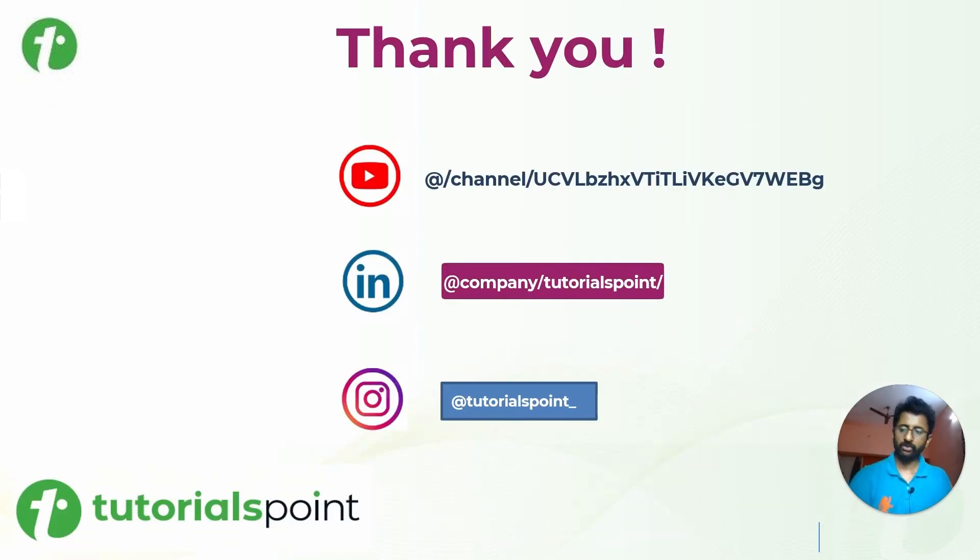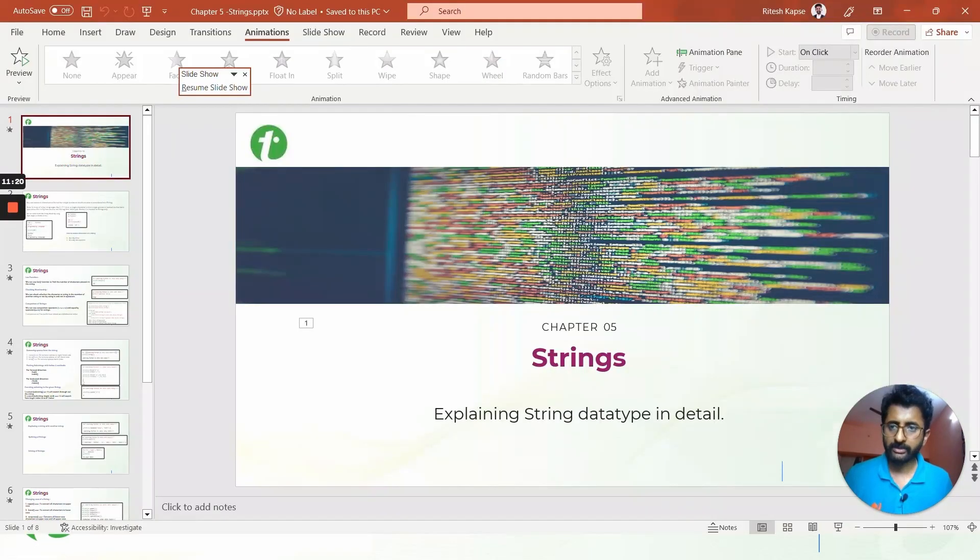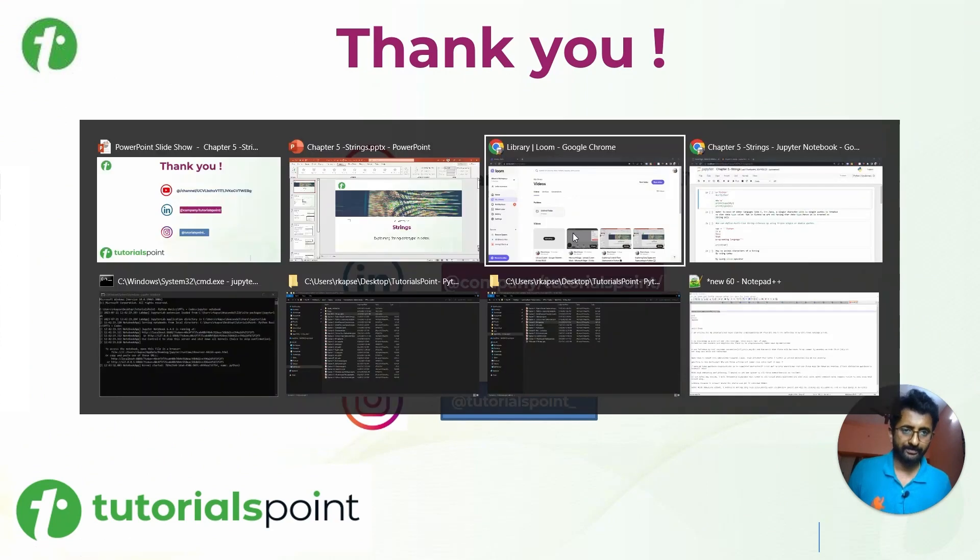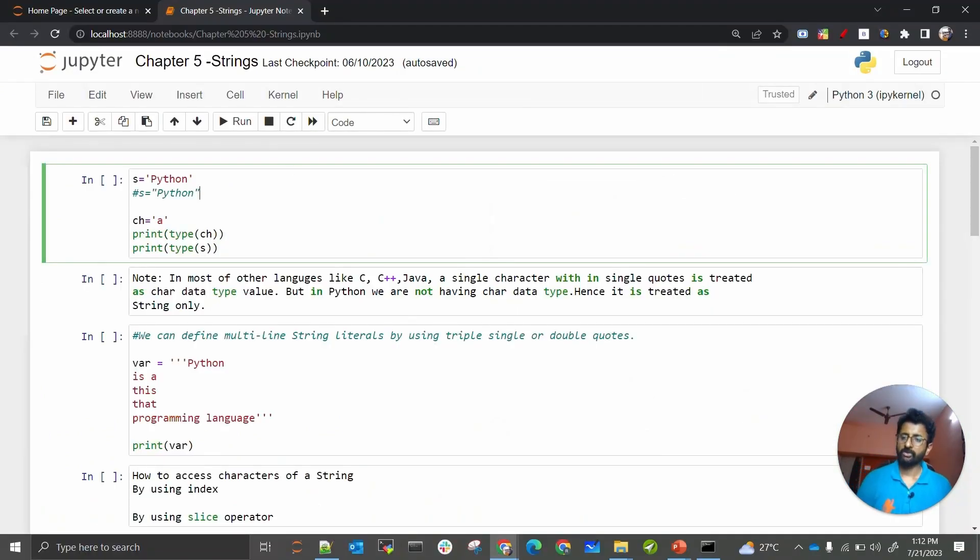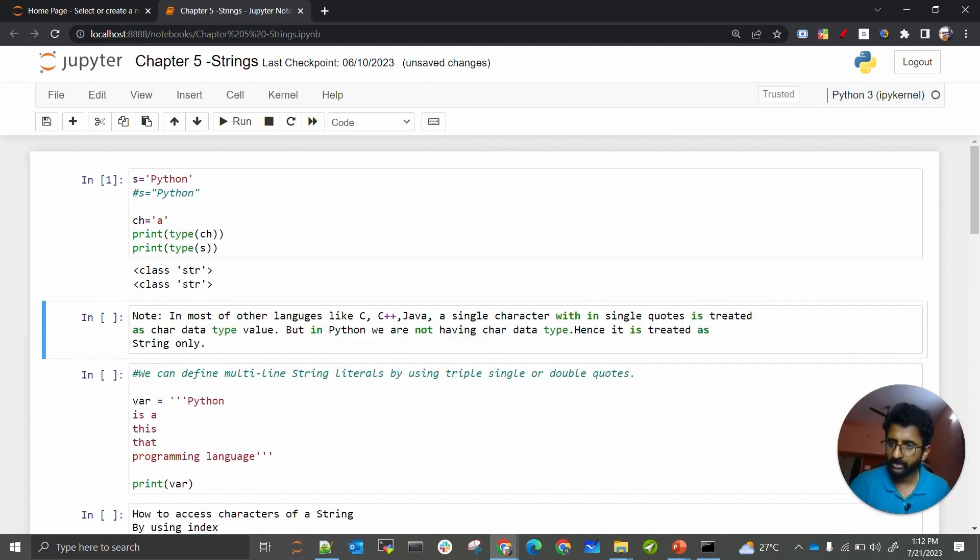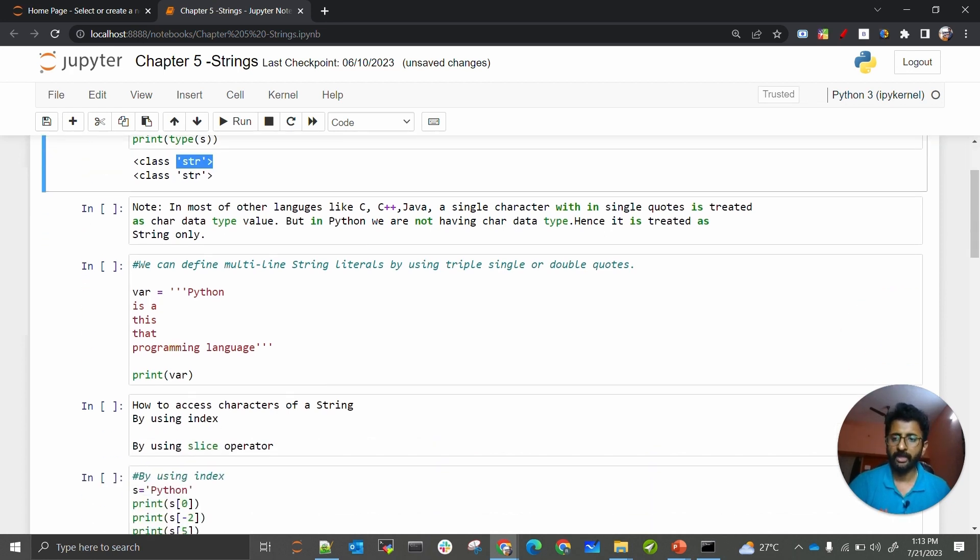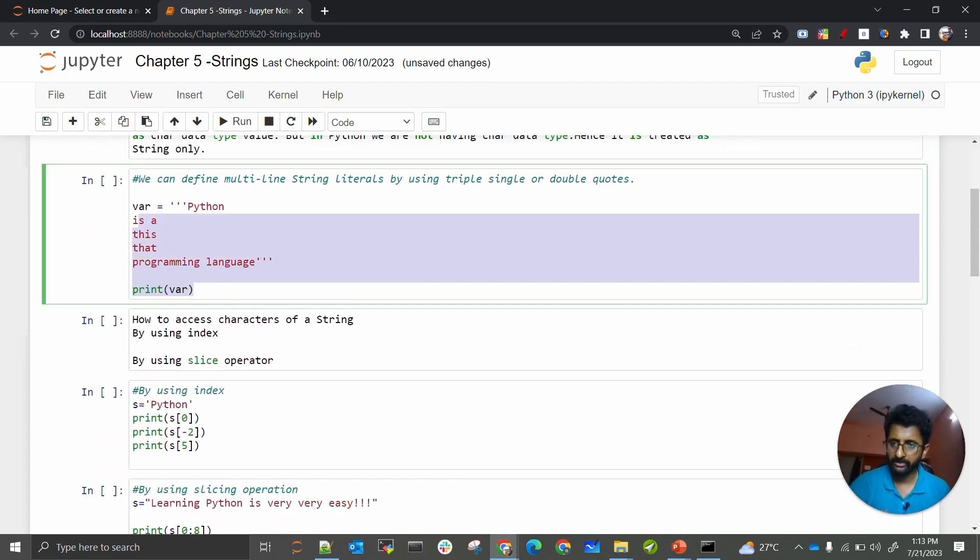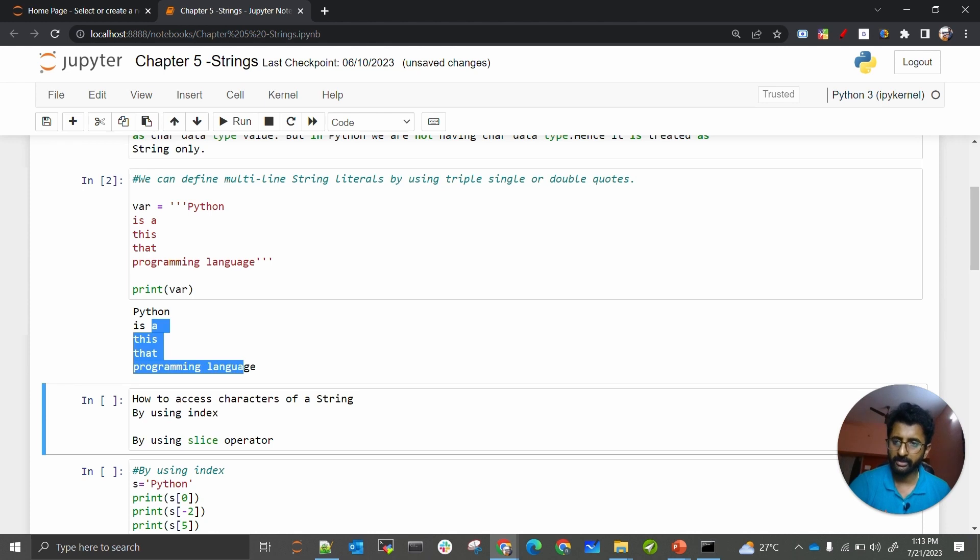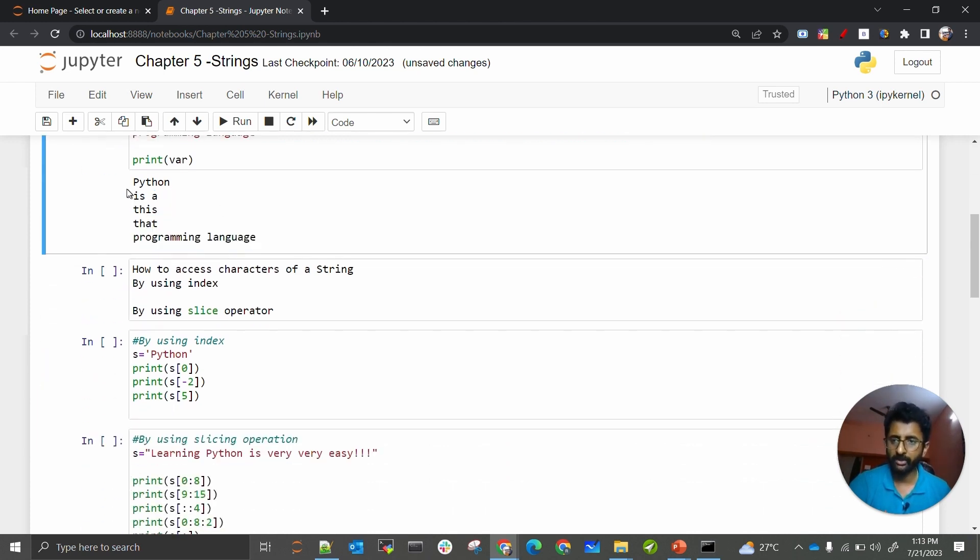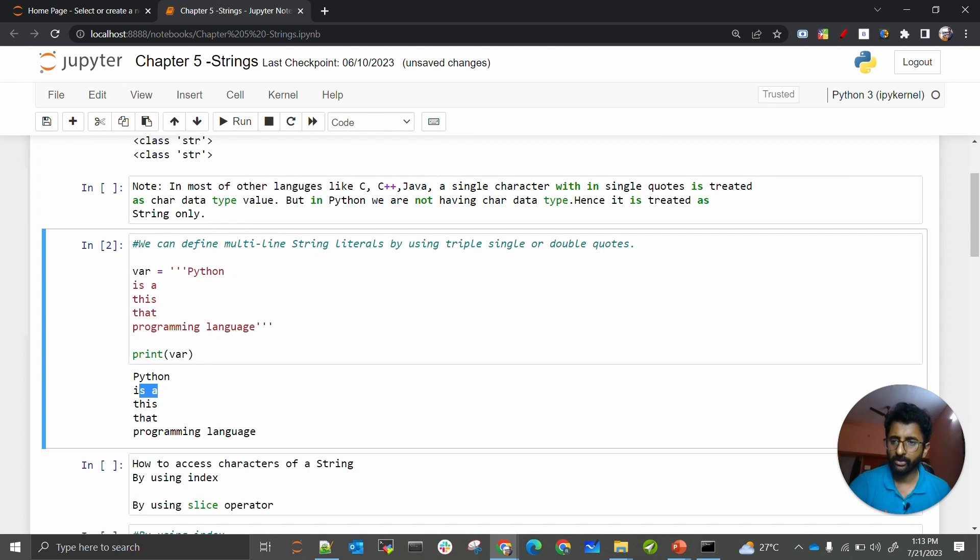With that said, let us quickly jump to the coding part. Inside the Jupyter Notebook, all those examples whatever we have seen, I have just written, and I am just doing shift enter to check if whatever we are seeing is true. This is multi-line strings. I am doing print, it will give me an output. This is multiple lines in each separate line, all these details are printed.